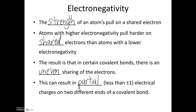Now, why is this? If we think about a tug-of-war situation, there are two possible scenarios. Either both sides are equally strong, and so the rope — or in this case the pair of electrons — are shared evenly between the two sides.